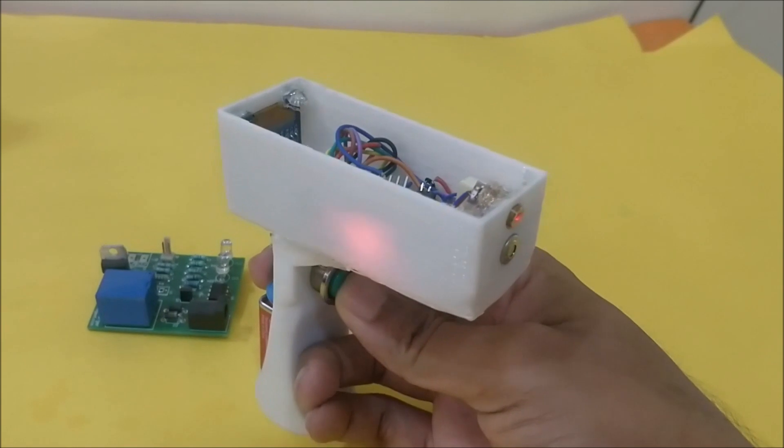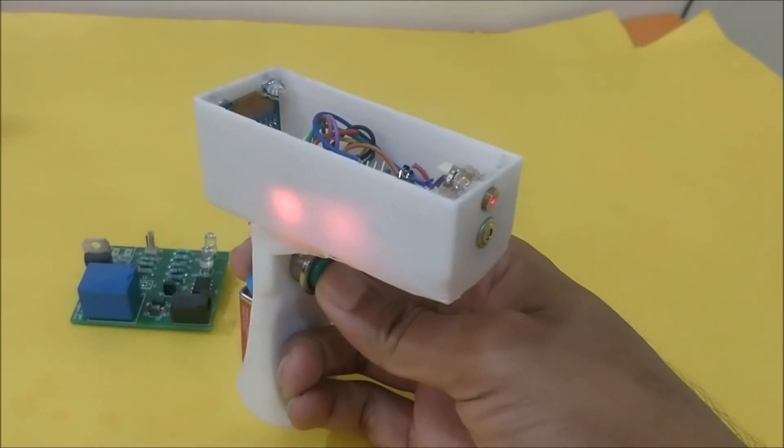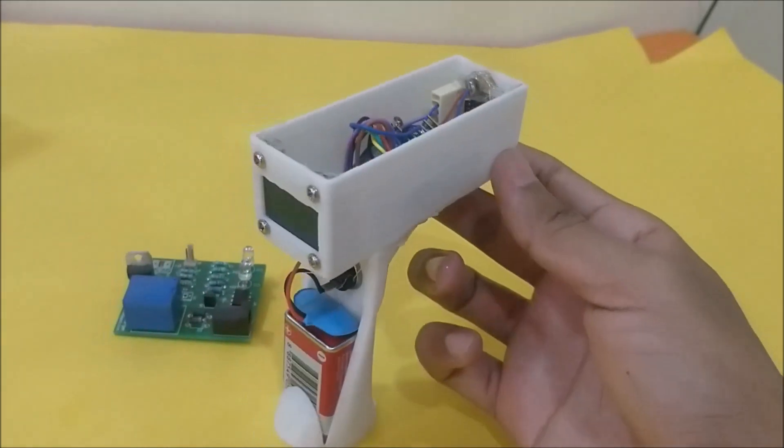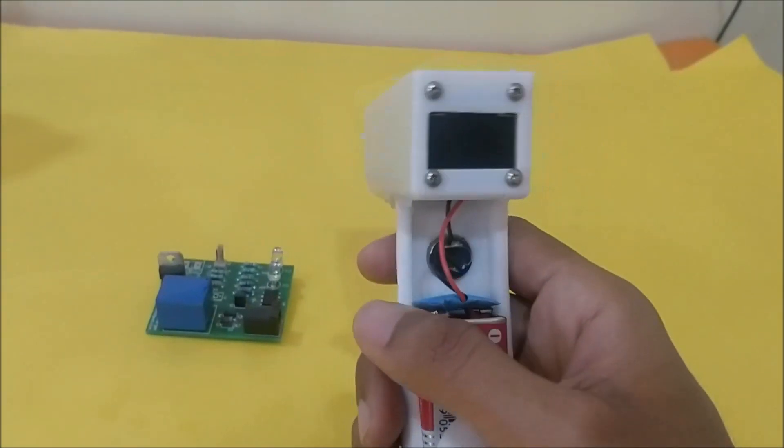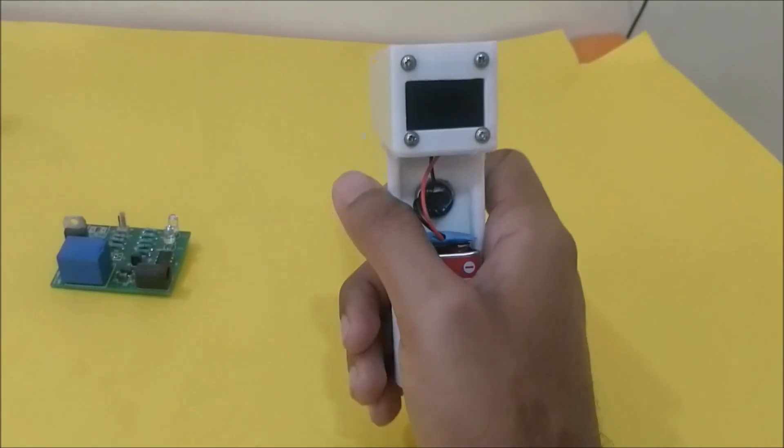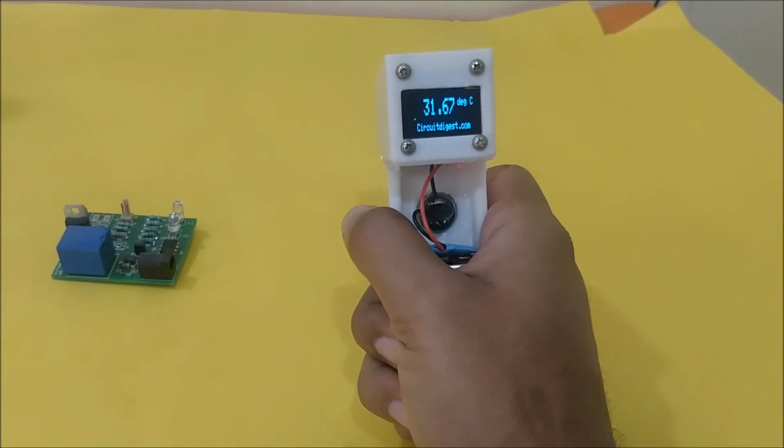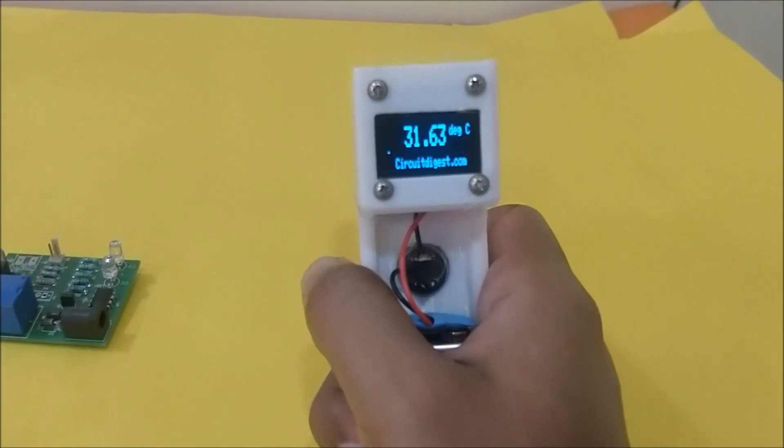Whenever I press the button, the circuit closes the connection for the Arduino and it gets powered. Let's see how it works. Let me point randomly on the sheet over here. I press the button and you can see the OLED displaying some message.